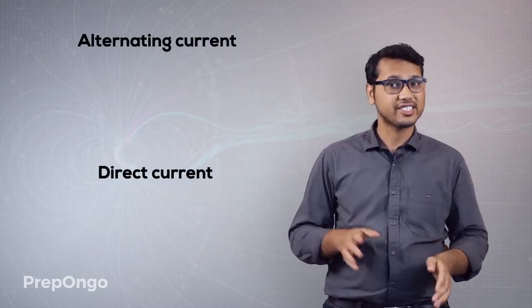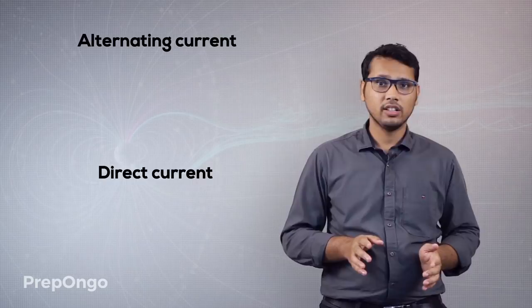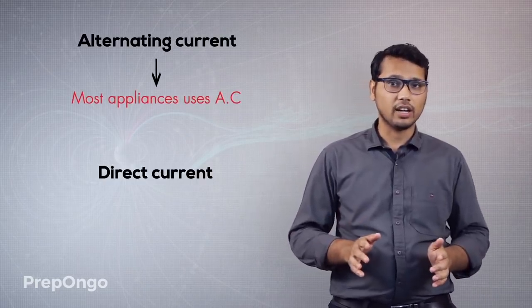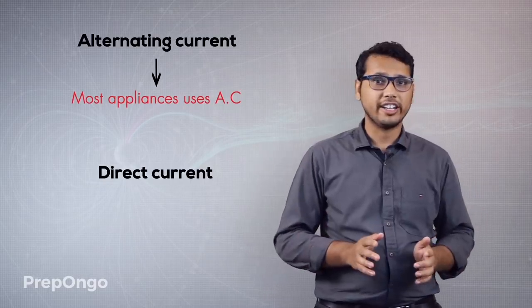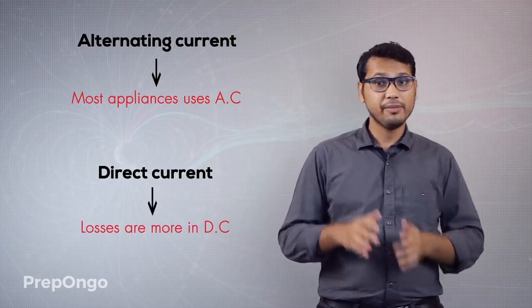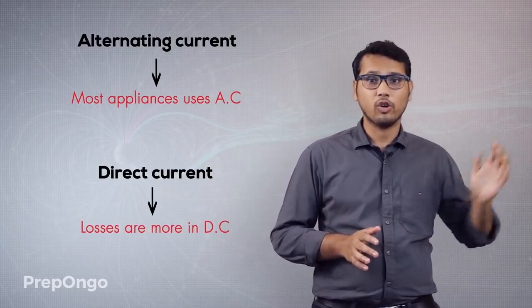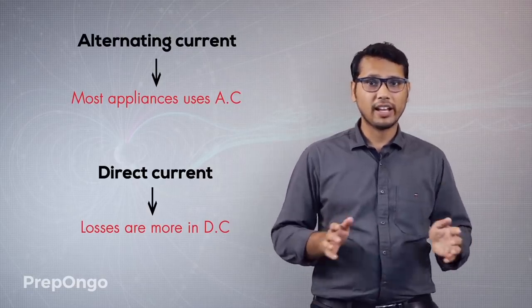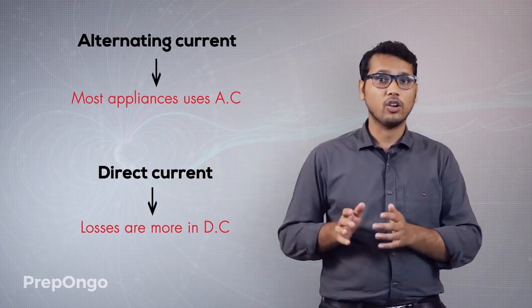We generally use two types of current at home: direct current and alternating current. Most of our appliances are based on alternating current, because the losses in direct current are much greater than in alternating current — that's why all our appliances are made to work on alternating current. In the next video we'll learn how all our appliances are connected to the power supply and what safety measures are taken to protect us from electric shocks.